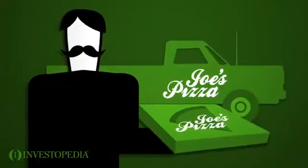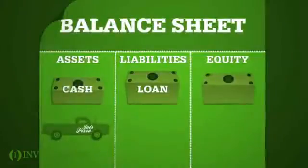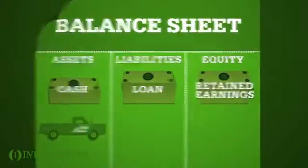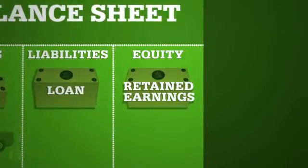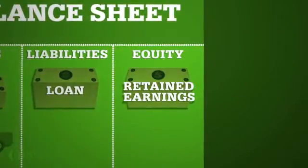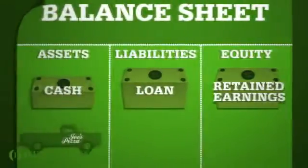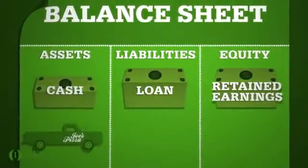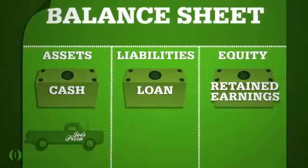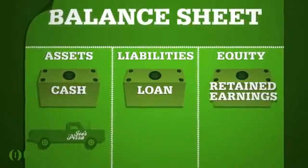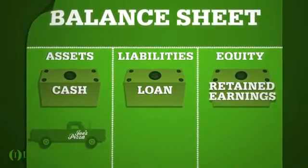As Joe delivers pizza, the profits are recorded in the balance sheet as retained earnings in the equity section. The cash from his profit is recorded in the assets section, balancing out.